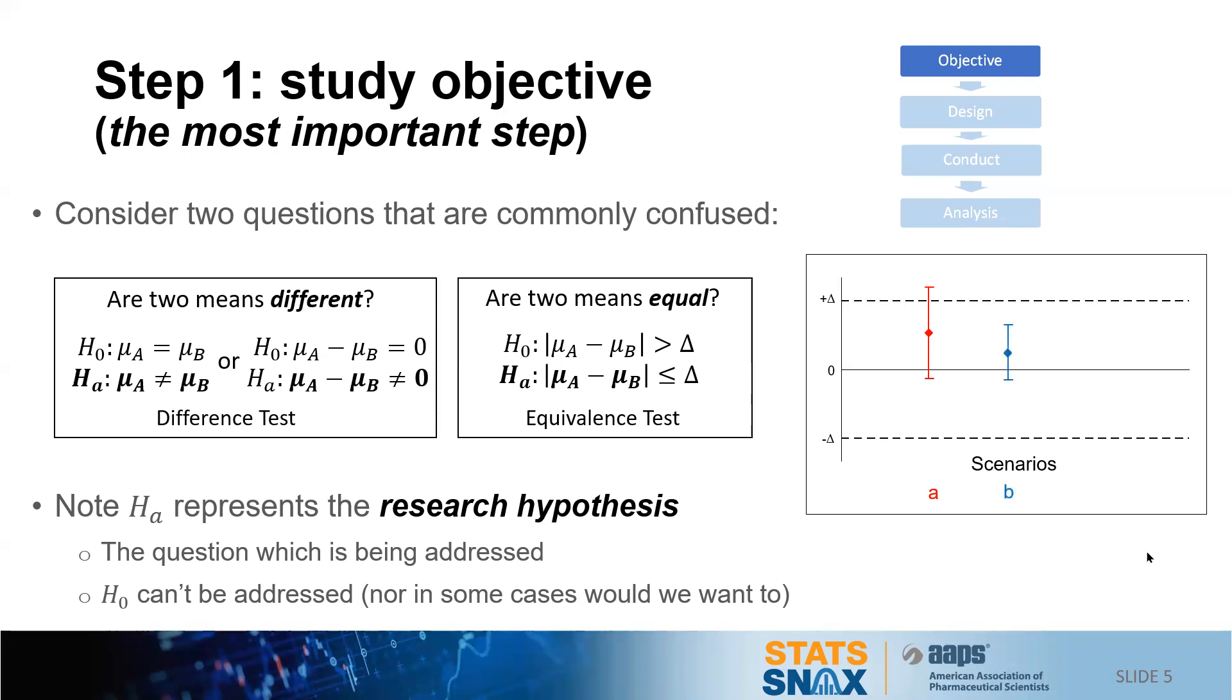Scenario B is a case where if we were looking at a difference test, we could say that there's no evidence of a difference, but at the same time, if we were doing an equivalence test, we could conclude that the two conditions are equivalent. μA is equivalent to μB because it's within the margin plus and minus delta.